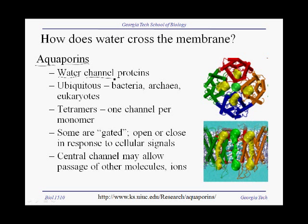In all of these, aquaporins assemble as tetramers. There are four identical subunits that assemble in the plane of the membrane. Here on this figure, we see a top-down view showing each of the four identical subunits in different colors. The yellow shows a view of the channel — the cavity formed by these aquaporin proteins — so the yellow is the water channel. As these molecules assemble into a tetramer, they often also form a channel in the middle, shown here in green, that could transport or serve as a channel for other molecules as well.